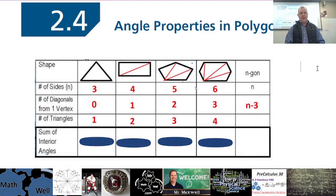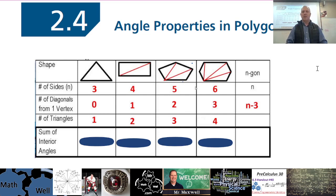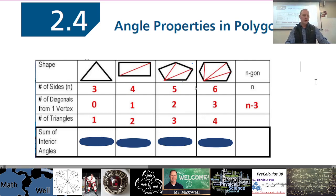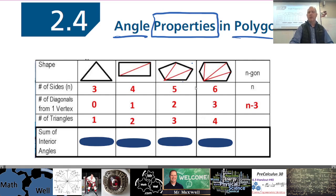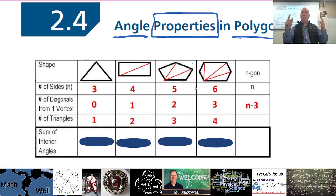All right, foundations math 20, section 2.4. We'll be talking about angles in triangles, angles with parallel lines and transversals. Today, section 2.4, we're talking about angle properties in polygons. So if we take a look at the title — angle properties — we're looking at what those angles tell us, what those angles are like, the sum of them, the size of them.